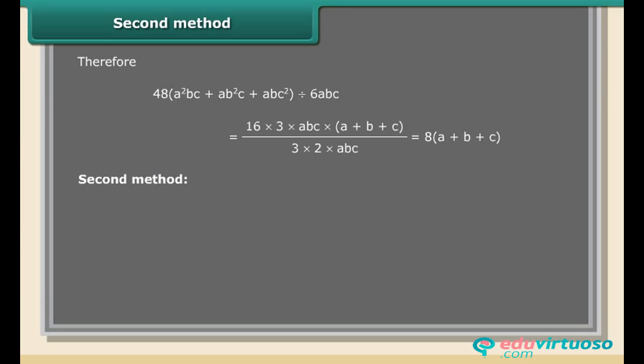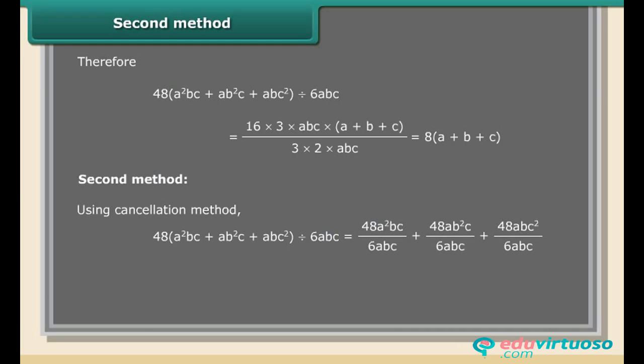Second method — using the cancellation method: 48(a²bc + ab²c + abc²) ÷ 6abc = 48a²bc/(6abc) + 48ab²c/(6abc) + 48abc²/(6abc) = 8a + 8b + 8c = 8(a + b + c).